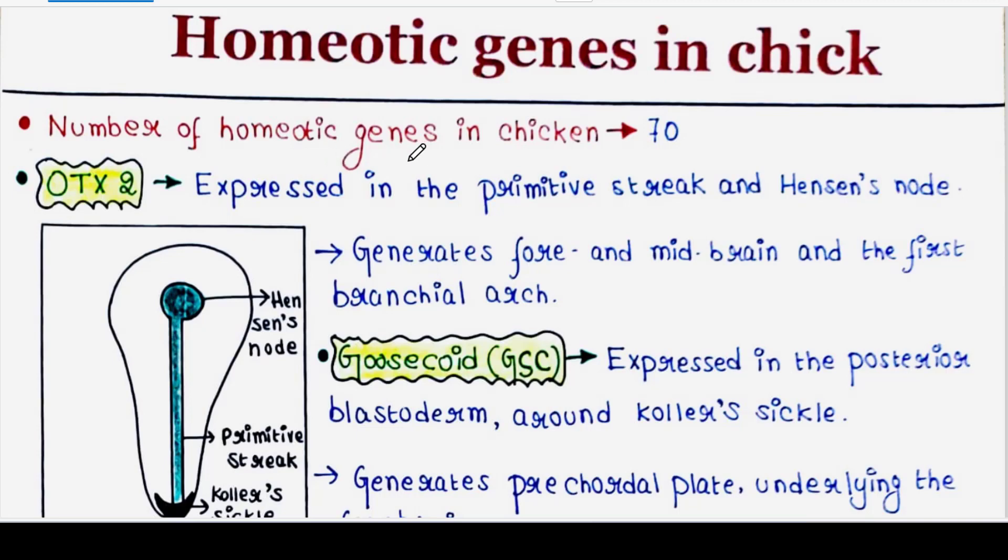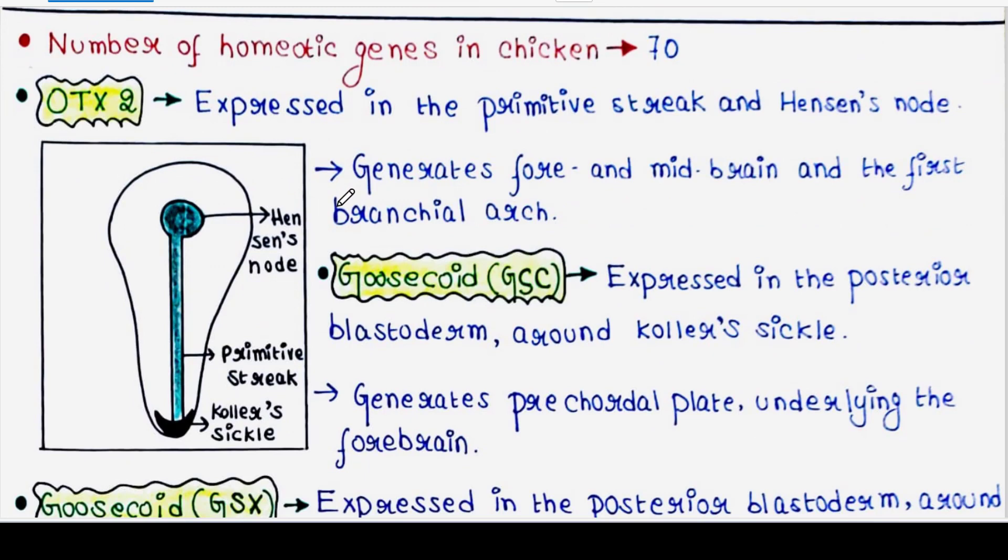So 10 homeotic genes are present in chick. We will talk about few of them. First is OTX2. This is expressed in the primitive streak and Hensen's node. It generates fore and midbrain and the first branchial arch.